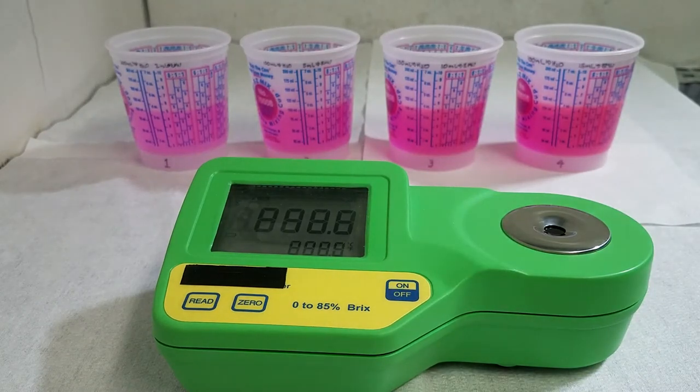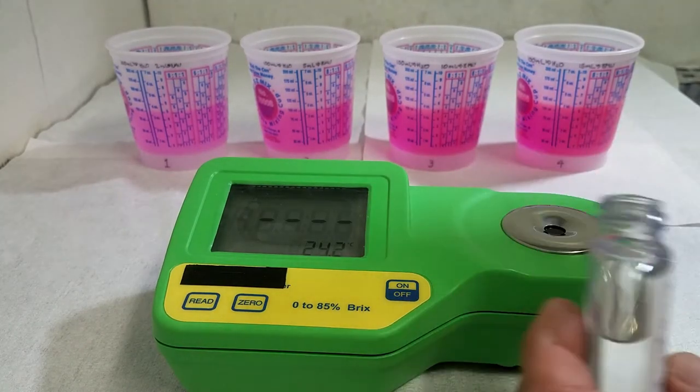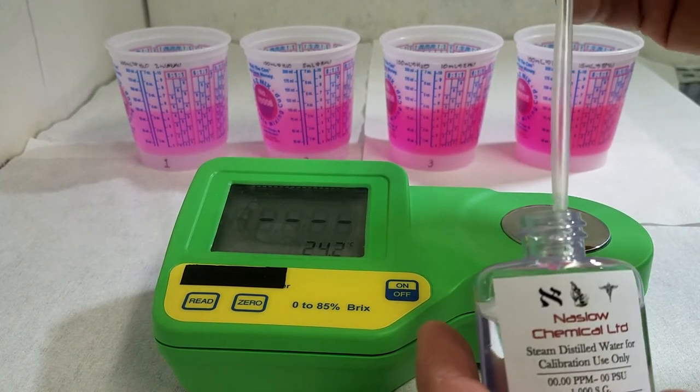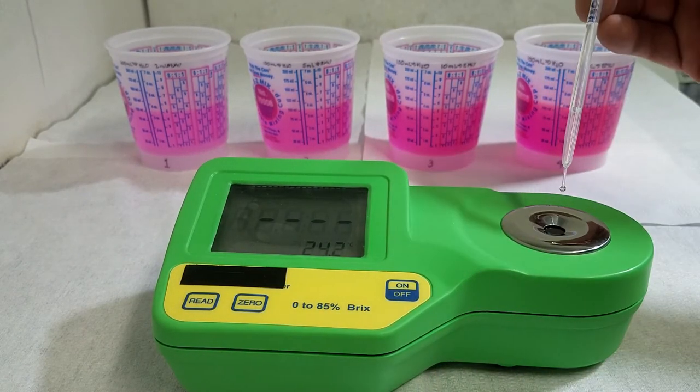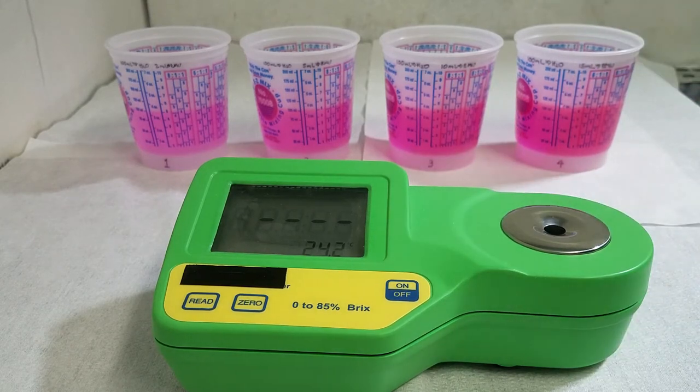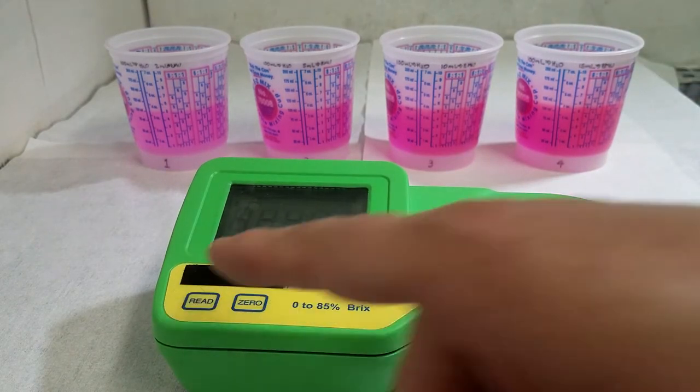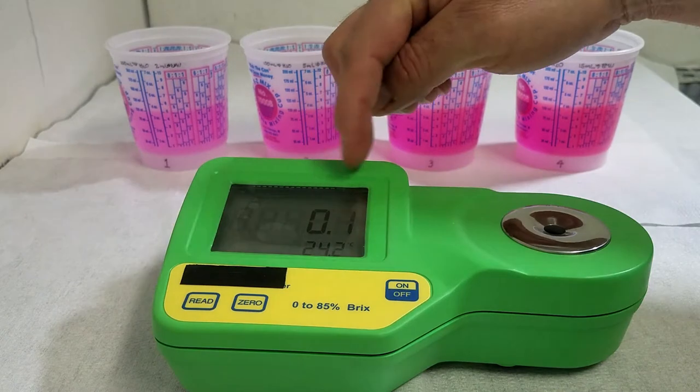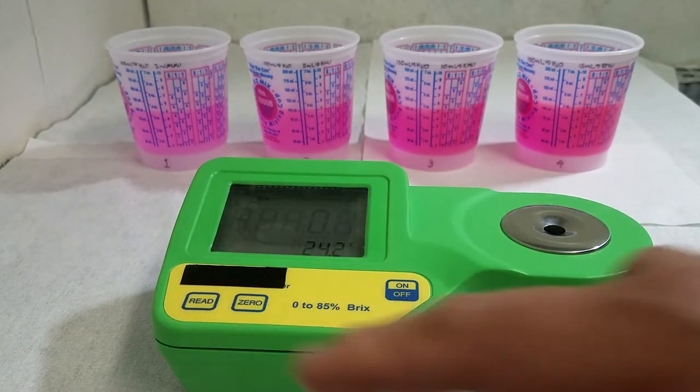To start using the refractometer, we need to set the reference point. Using a clean pipette, we are going to apply some drops of distilled water into the window sample. After, push the read button to get the measurement.